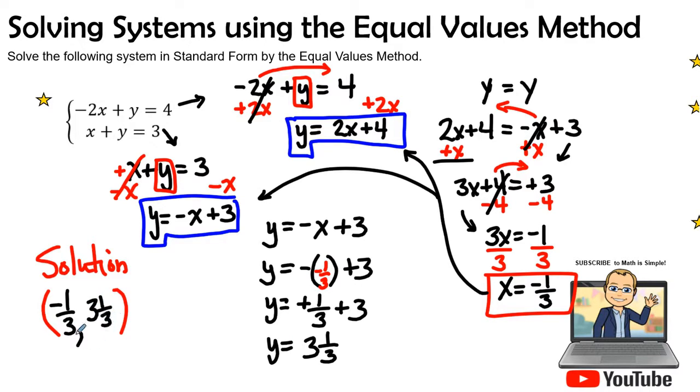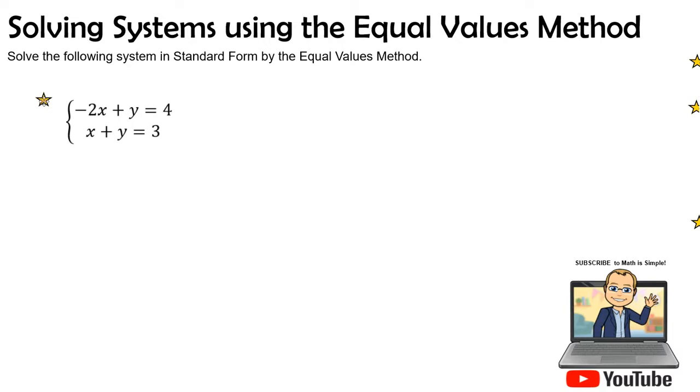When we go ahead and simplify, negative times the negative is a positive 1 third, plus 3, therefore our y value is 3 and 1 third. The solution is negative 1 third, 3 and 1 third. That looks like it would be really crazy to graph, so that's good that you know how to solve it this way. So we don't have to worry about graphing. Let's go ahead and try one more. This was a little hairy, so let's get some more practice.